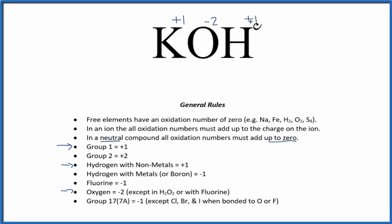So +1, -2, and +1 add up to zero. That works with our rules and makes sense.